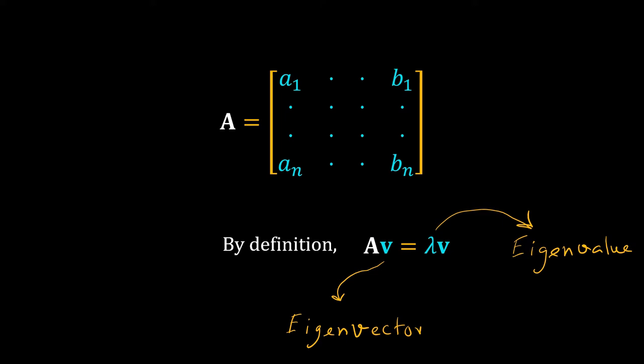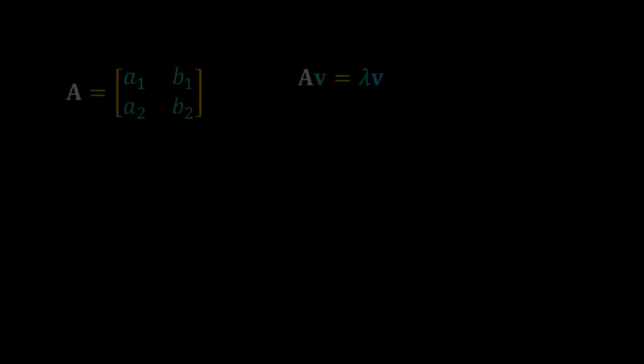We will be using two by two matrices very frequently. It is easy to calculate the eigenvalues and eigenvectors of a two by two matrix. A is a two by two matrix; we want to calculate the eigenvalues and eigenvectors for this matrix.